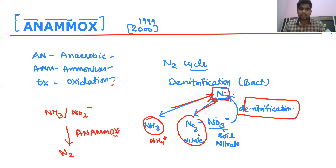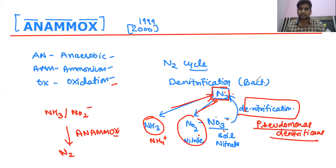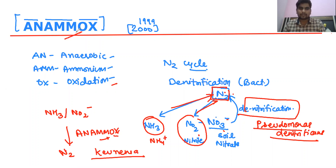Anammox is both an oxidative and anaerobic process. Bacteria are involved in this process, just as in denitrification where Pseudomonas denitrificans is involved. Similarly, in Anammox, certain bacteria are involved; these are called Anammox bacteria, and an example is Kuenenia.